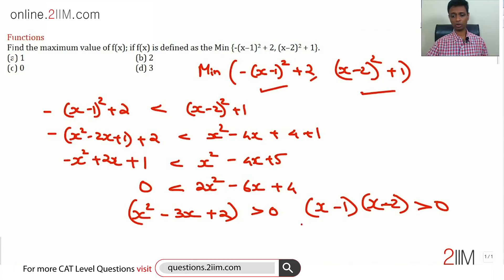It is a very simple inequality to solve. Whenever you are given a quadratic expression of the form (x-a)(x-b), it is negative when x lies between the roots, positive when x lies outside the roots. This holds good when x is less than 1 or x is greater than 2.